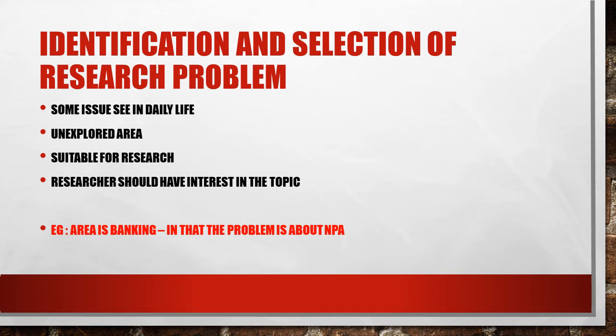Whatever the source of the idea for undertaking a research study, the research problem should be suitable to research, meaning it should have scope for research. The researcher should have interest in the topic — that is, the researcher should have better comprehension of the topic, be able to comprehend the concepts better and dwell more into the matter. It should also have relevance to a current issue.